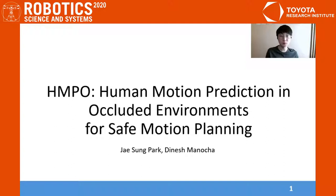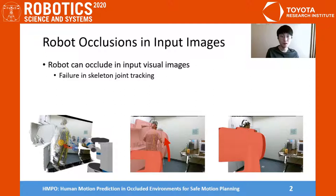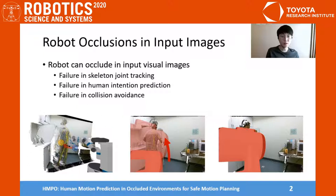When the robot and the human are in the same space, there is a chance for the robot to occlude the human in the input images. For example, when the robot arm moves upward, it completely occludes the human as shown in the right images. Then the human skeleton joint tracking may be lost, the human intention prediction fails, and the collision avoidance fails, which is critical for human safety.